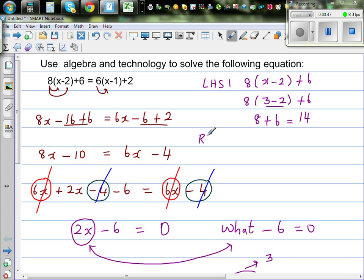So what's your right hand side? Your right hand side is 6 times bracket 3 minus 1 plus 2, which is 6 times 2 plus 2. This is 12 plus 2 which is 14. So this is how you can do it algebraically.